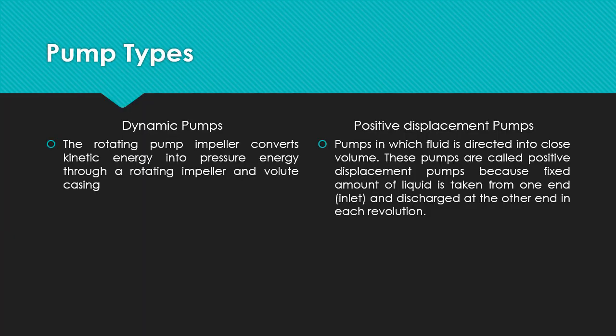What is the major difference between dynamic pumps and positive displacement pumps? In dynamic pumps, the rotating pump impeller converts kinetic energy into pressure energy through a rotating impeller and a fluid casing. Whereas in positive displacement pumps, the fluid is directed into a closed volume. These pumps are called positive displacement pumps because a fixed amount of liquid is taken from one end and discharged at the other end in each revolution.